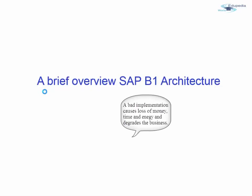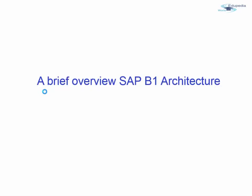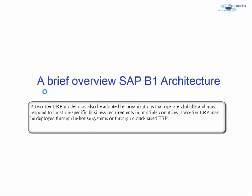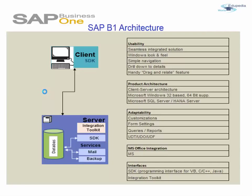A badly implemented ERP could cause severe damage to the business. In a typical two-tier architecture, the server handles both application and database duties. The clients are responsible for presenting the data and passing user input back to the server. Let's see what the SAP Business One architecture looks like.